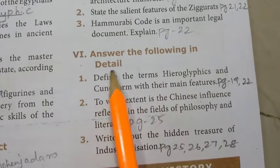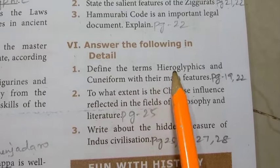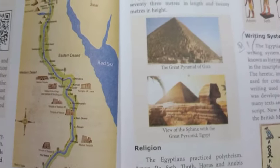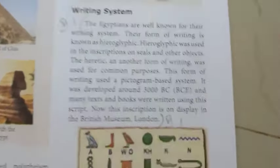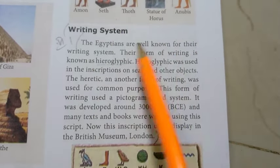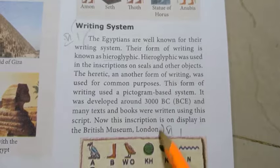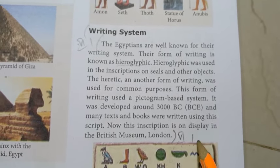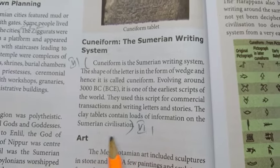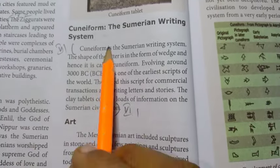Roman number six: answer the following in detail. First question: define the terms hieroglyphics and cuneiform with their main features. Refer to page numbers 19 and 22. On page 19, under writing system — the Egyptians are well known for their writing system, the whole paragraph. On page 22, the cuneiform paragraph covers the detail on cuneiform. Write about hieroglyphics and then cuneiform.